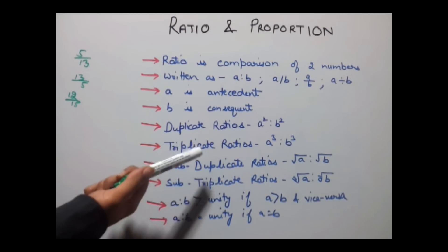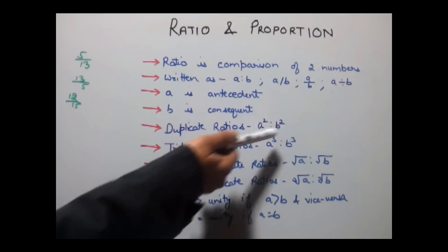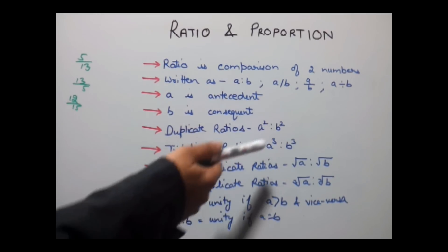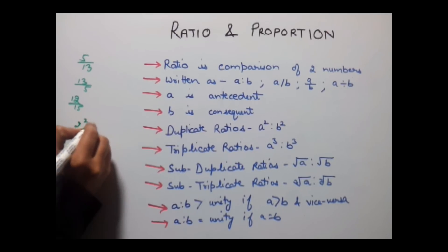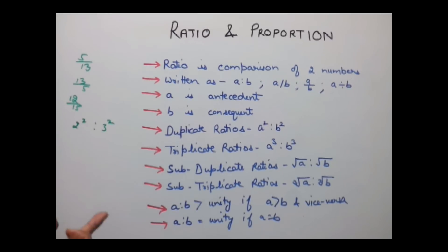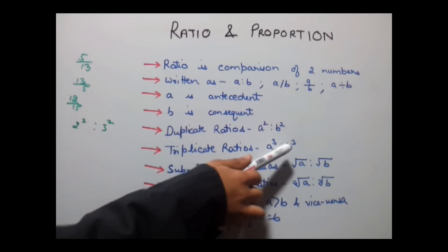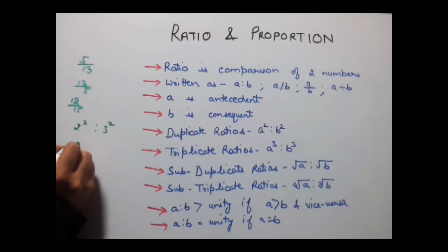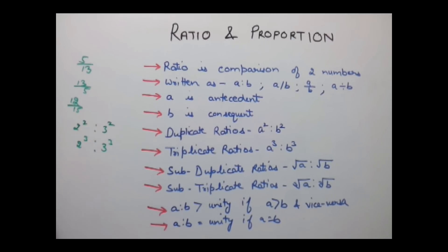Duplicate ratios are written as A squared ratio B squared. So if you see numbers with a power of 2, such as 2 squared ratio 3 squared, that is a duplicate ratio. Similarly, in a triplicate ratio, you have cubes — for example, 2 cubed ratio 3 cubed is a triplicate ratio.